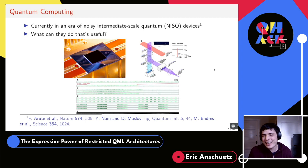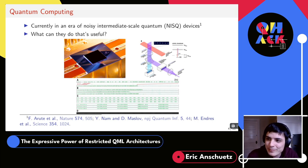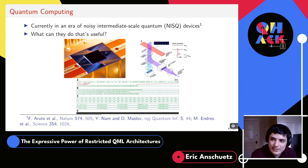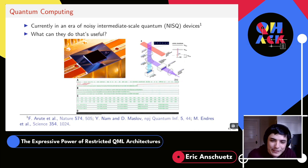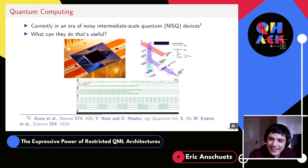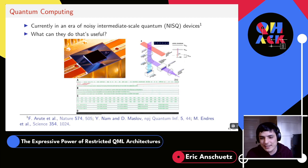We're in the era of noisy intermediate scale quantum devices, or NISQ devices — things like Google's Sycamore device or IonQ's ion trap devices. These are noisy quantum computers that are pretty small but are starting to do things on the verge of classical intractability. It's a very exciting time to be a quantum computing researcher, but it's an open question what useful things these devices can do.